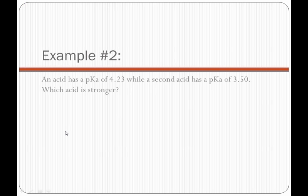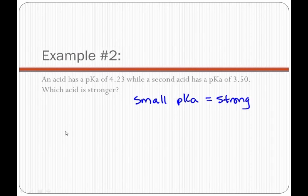If an acid has a pKa of 4.23 and a second acid has a pKa of 3.50, which acid is stronger? We want to remember that small pKa values give strong acids. So we look at the two pKa values and see that 3.50 is less than 4.23. Therefore, the acid with the 3.50 pKa is the stronger acid.